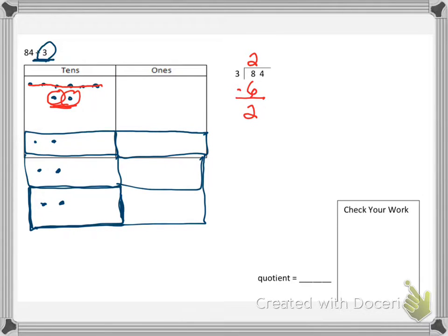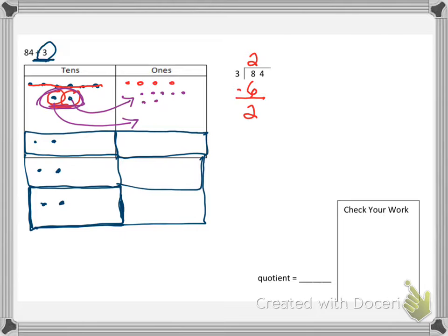Now what we need to do is take apart the 84 and give us 4 ones: 1, 2, 3, 4. Then we need to decompose these 2 tens and put them into ones: 1 through 10, and then another 1 through 10. So now we have 24 ones.